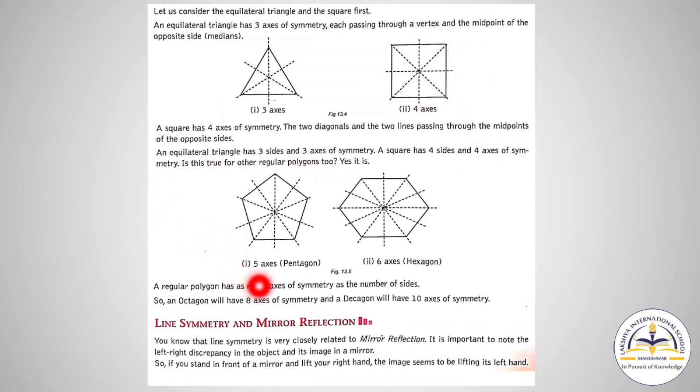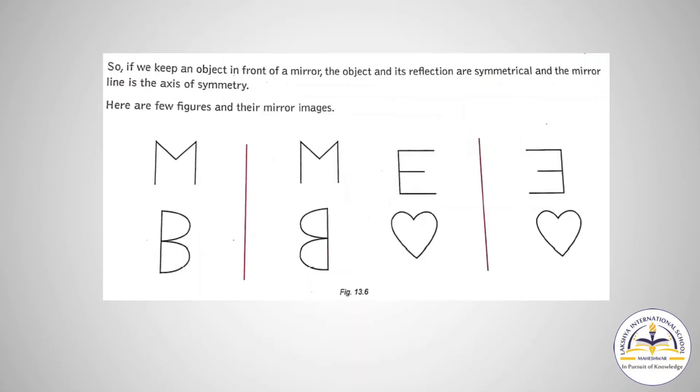Now for the pentagon also, same, and for the hexagon also, we can find the axis of symmetry. Now we will see line symmetry and mirror reflection. You can see this is the mirror reflection for a particular figure—this is the mirror image for a given figure.